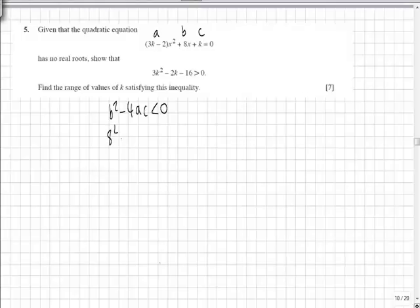Substituting in we get 8 squared minus 4 lots of 3k minus 2 multiplied by k has to be less than 0.